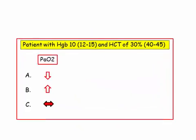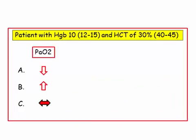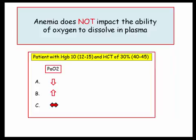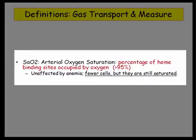So, here is the classic anemia scenario. They will give you a patient with anemia, and ask what happened to the partial pressure of oxygen. The answer is no change. A low blood count doesn't impact the ability of oxygen to dissolve in the plasma.